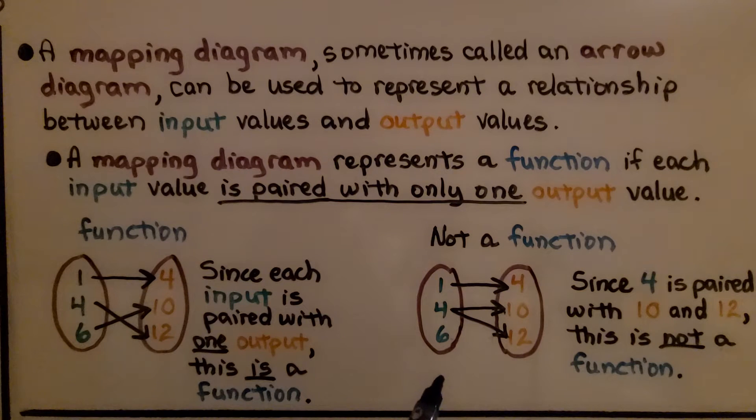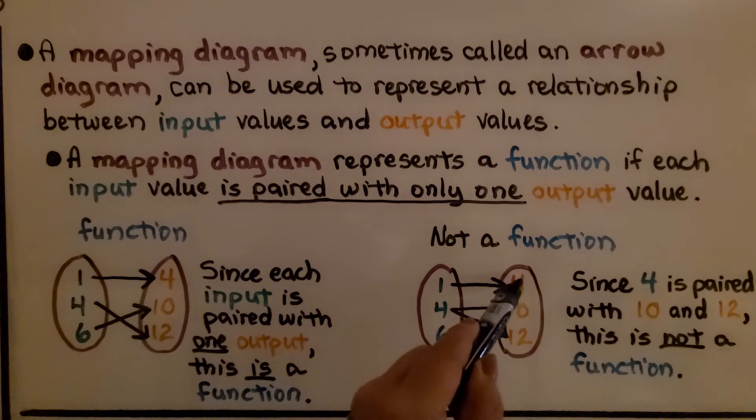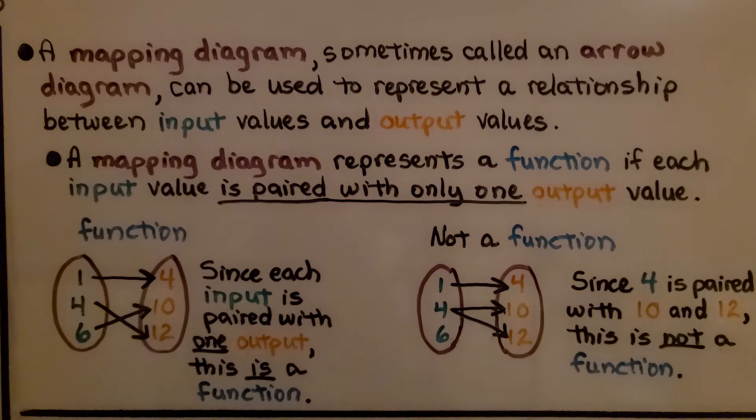So this is not a function. We have the 1 going to the 4, but then the 4 is going to both the 10 and the 12. Since 4 is paired with 10 and 12, this is not a function. It can only have one arrow coming out of the input.